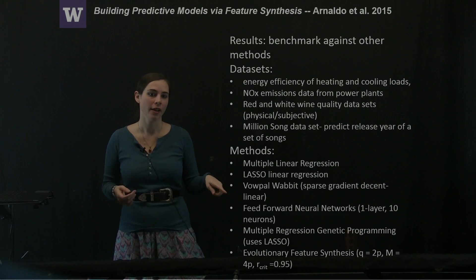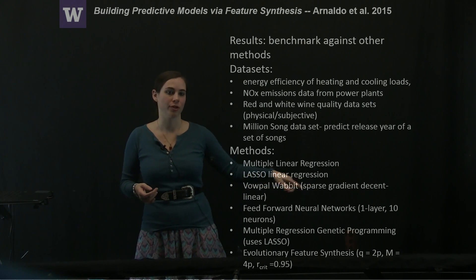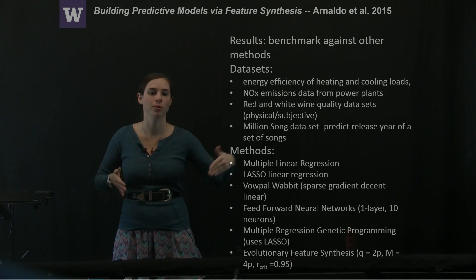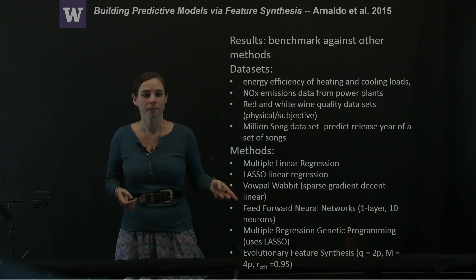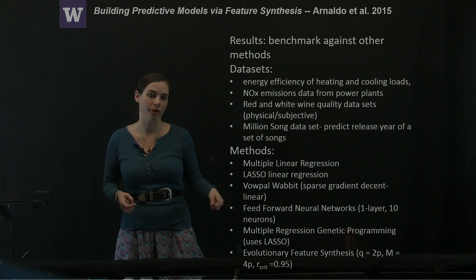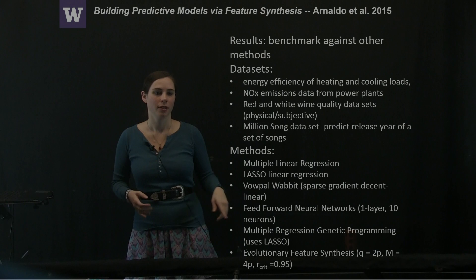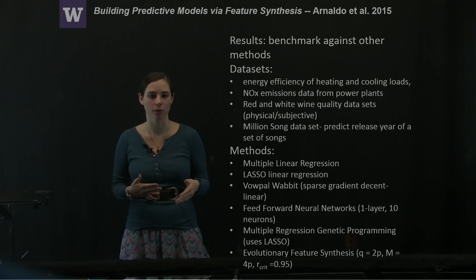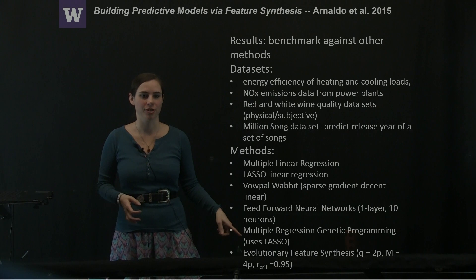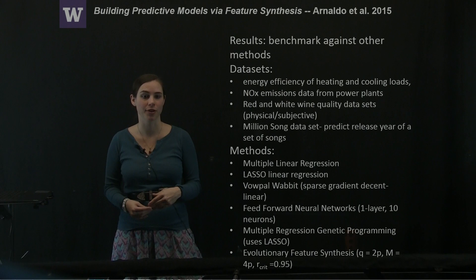The methods that they benchmark against are these three linear methods, so multiple linear regression, LASSO linear regression, and the Vowpal Wabbit sparse gradient descent linear, which is also a linear method, or it fits to a linear model. They compare against a feedforward neural network, which is known to deal well with nonlinear type datasets.